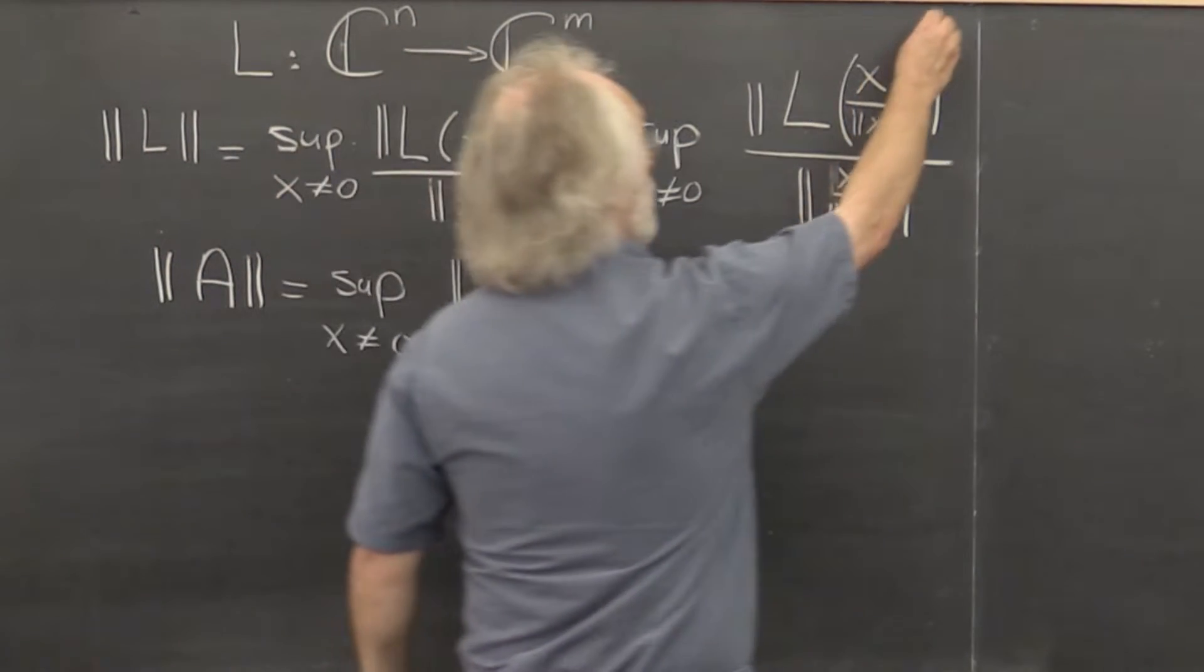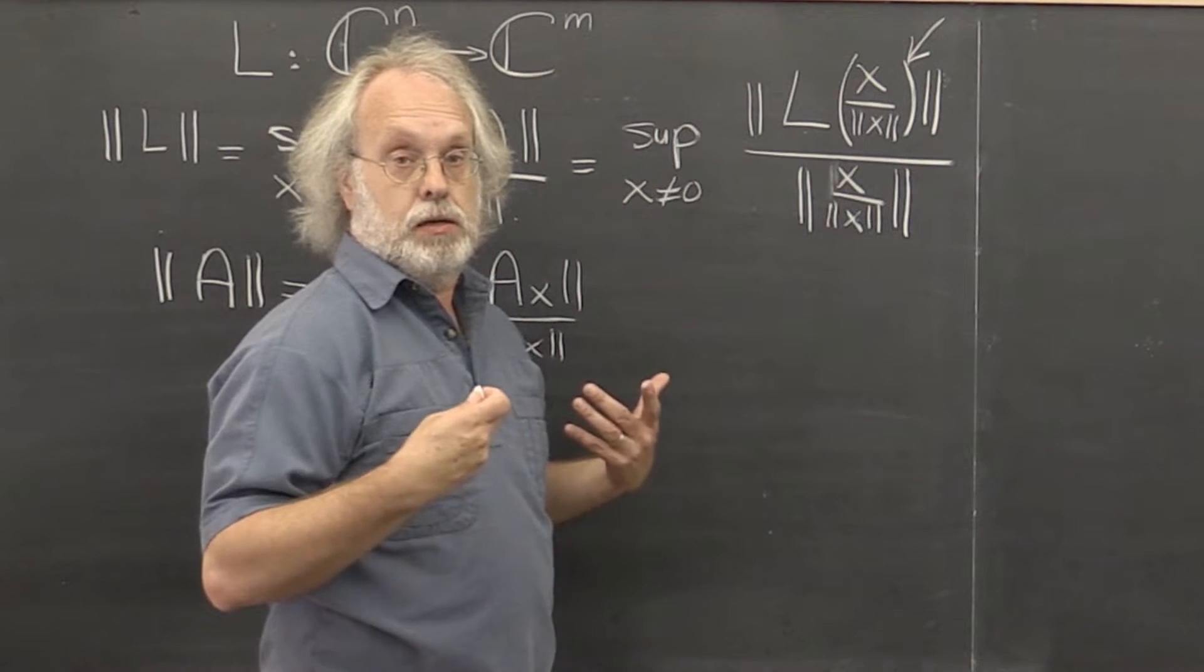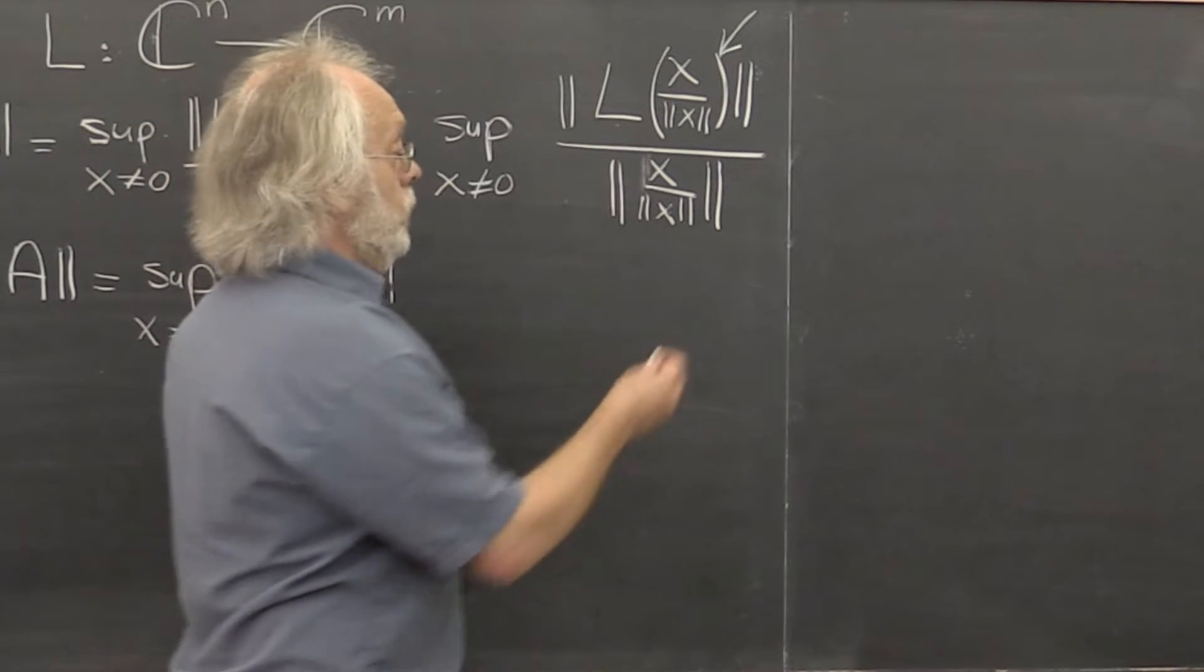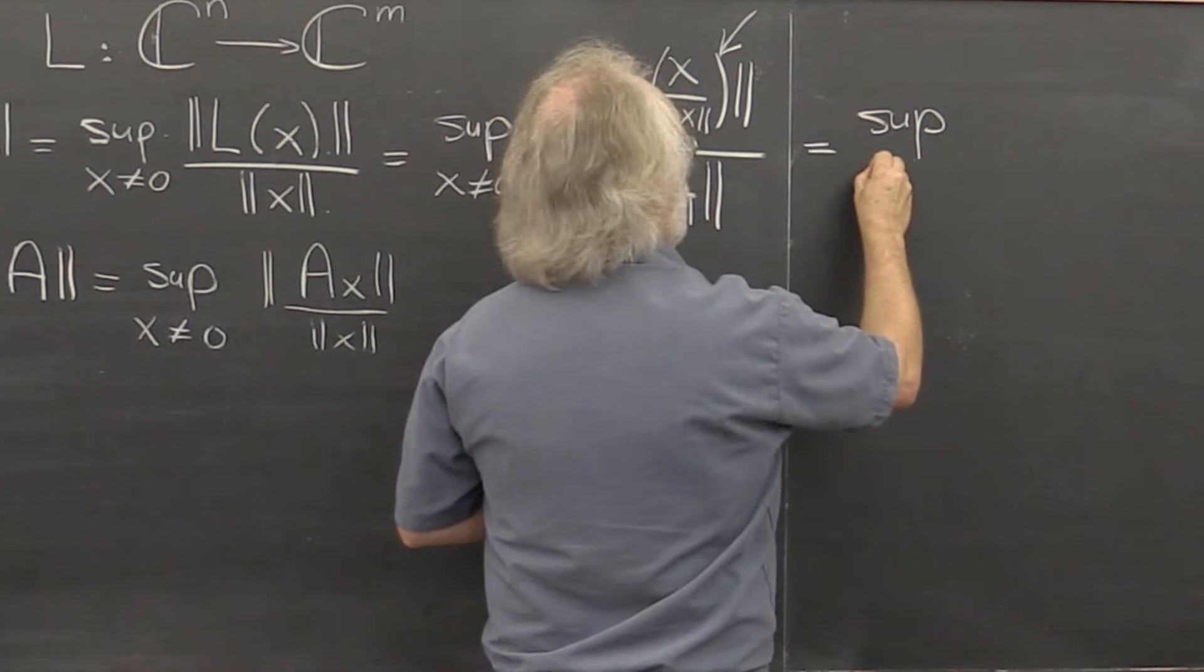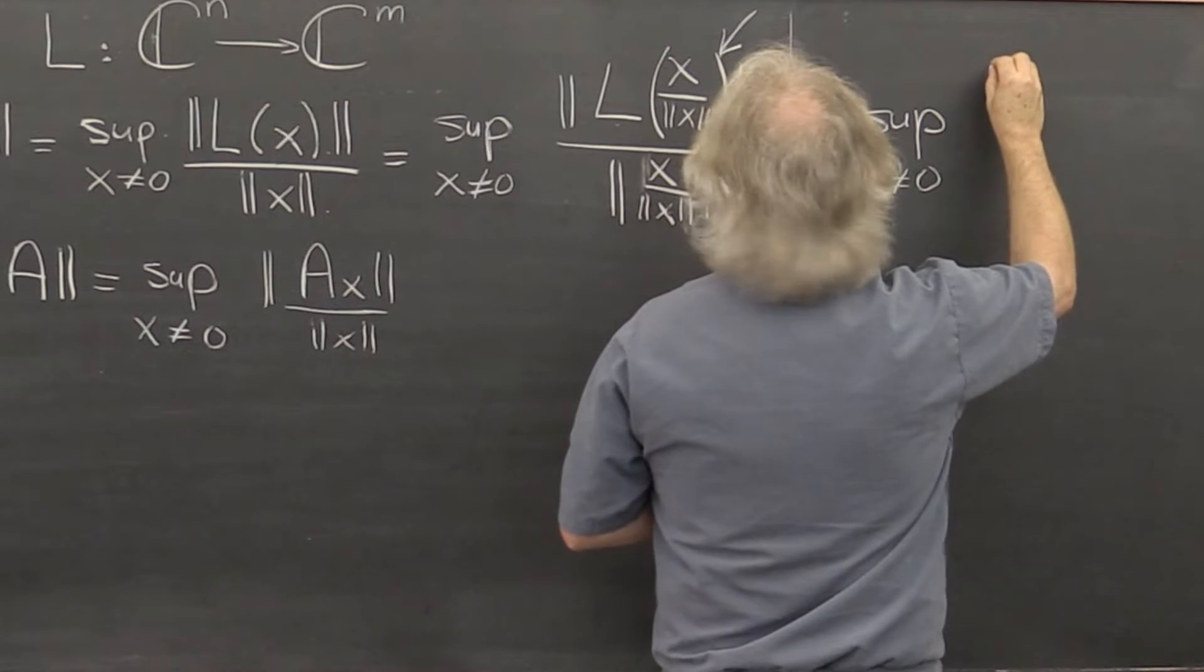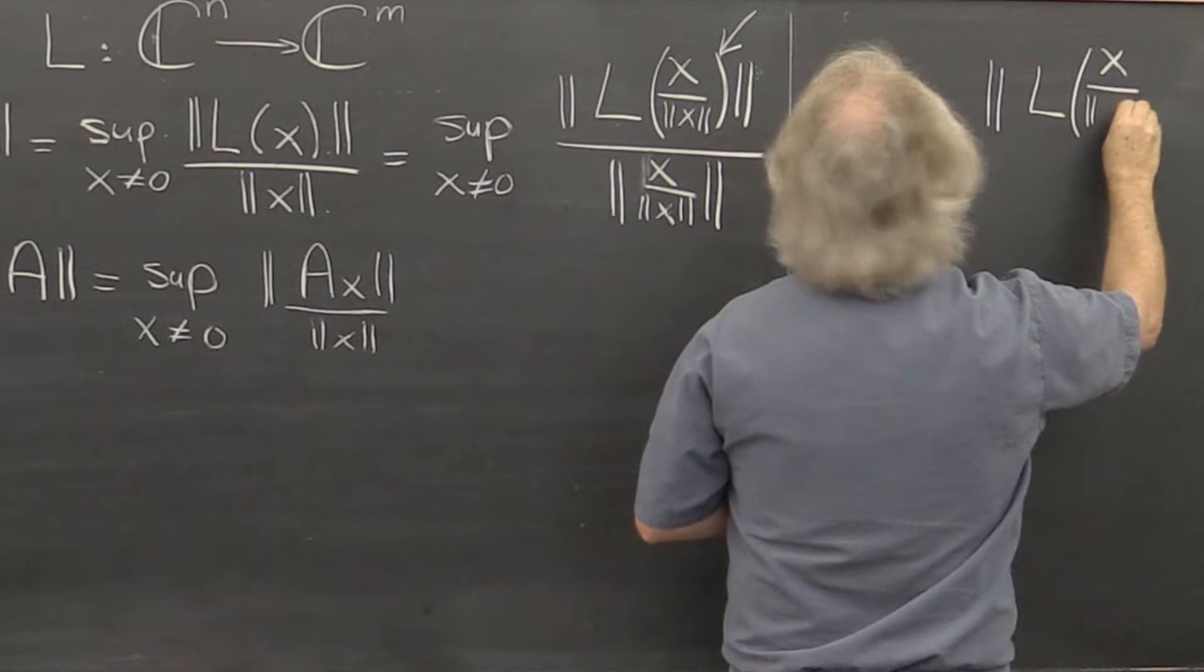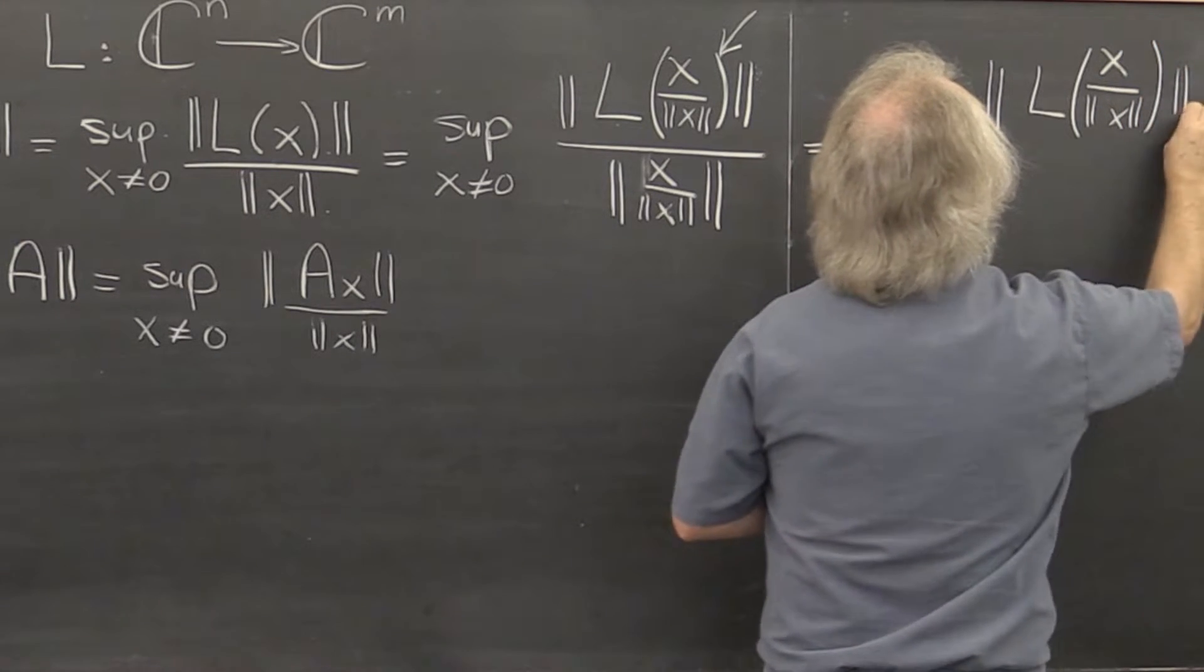And what we now recognize is that x/||x|| is a vector of length 1, of norm 1. So what we conclude is that this is the same as the supremum over all x where ||x|| = 1 of by how much a vector of length 1, as measured by the given vector norm, is stretched.